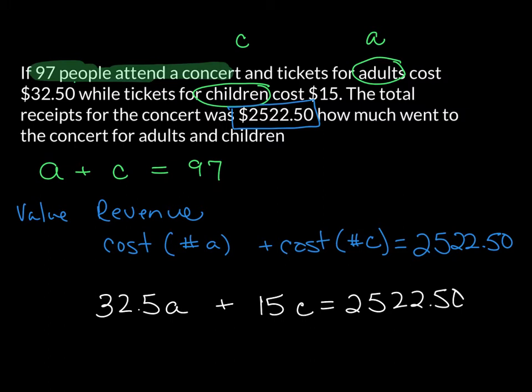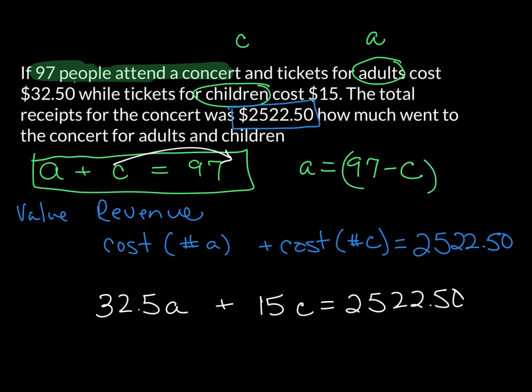Now, we have to use substitution here. I'm going to take the sum of the tickets and I want to solve for A or C. It does not matter which one, so I'm going to move C to the other side, and I get the fact that A is equal to 97 minus C. I'm going to take that and plug it in for A.